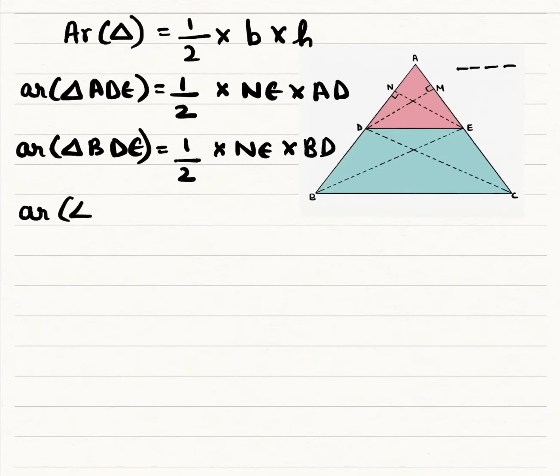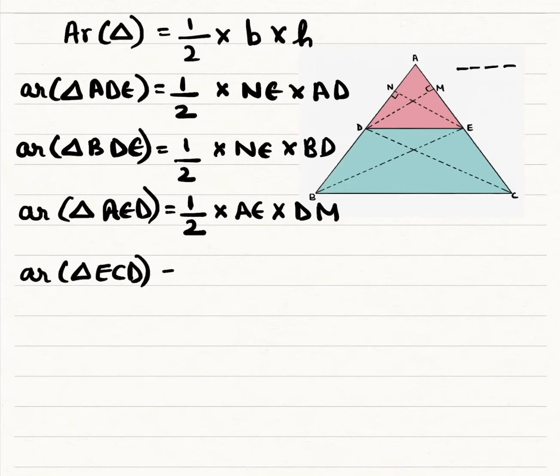We can see what is going to happen further on. Area of triangle AED is equal to half times AE times DM, and area of triangle ECD is equal to half times EC times DM.